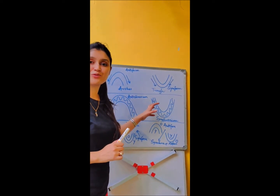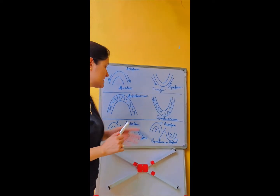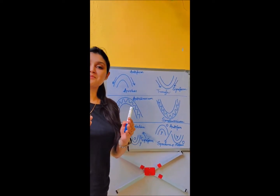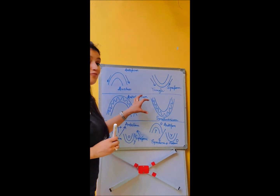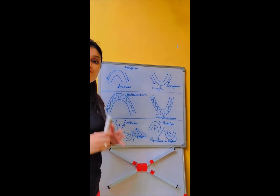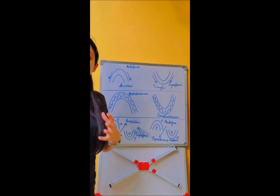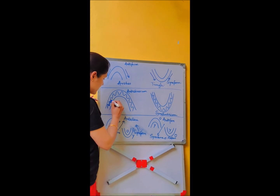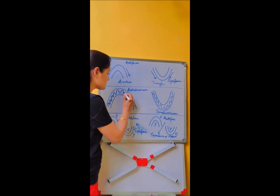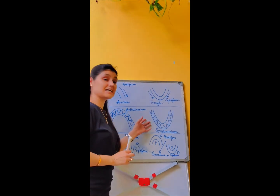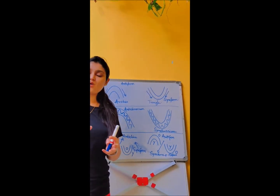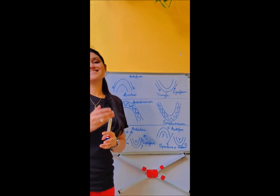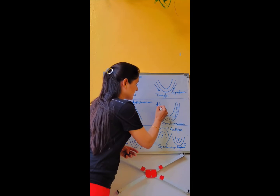Coming towards the anticlinorium and the synclinorium: the anticlinorium and synclinorium is a major, large mega-structure of antiform, or you can say a mega-fold — your major antiform or synform — where small anticlines and synclines are inscribed in it. Similarly, this is a synclinorium which is a mega or major synform wherein small anticlines and synclines are inscribed in it.